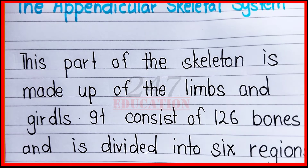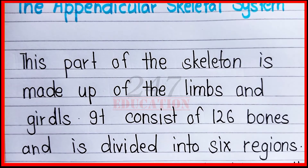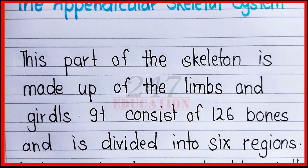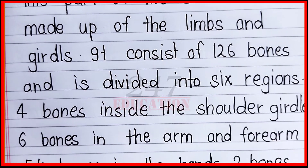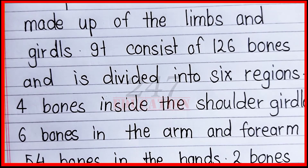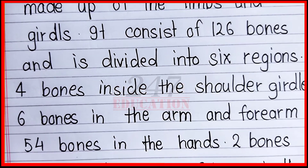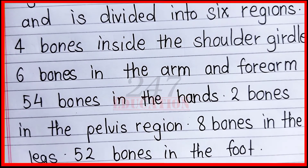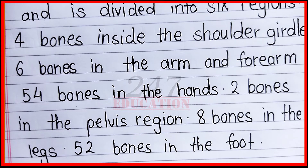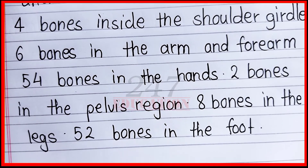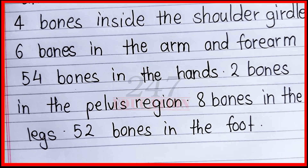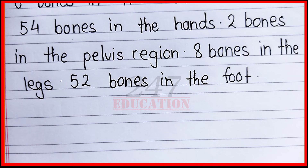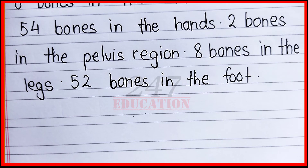It consists of 126 bones and is divided into six regions: four bones inside the shoulder girdle, six bones in the arm and forearms, 54 bones in the hands, two bones in the pelvis region, eight bones in the legs, and fifty-two bones in the foot. Thank you.